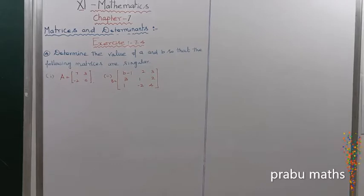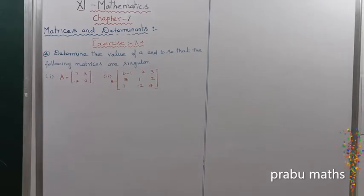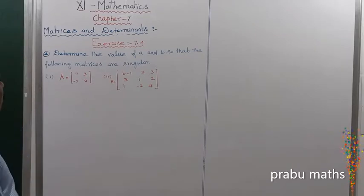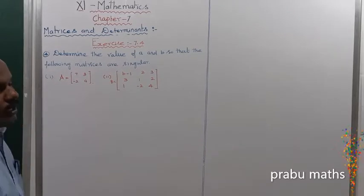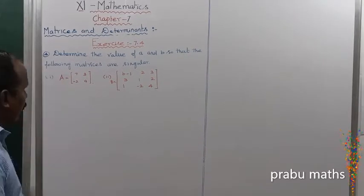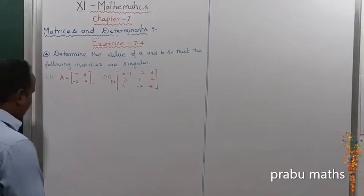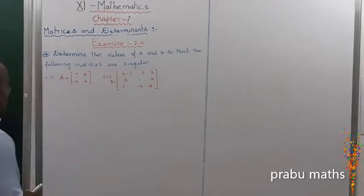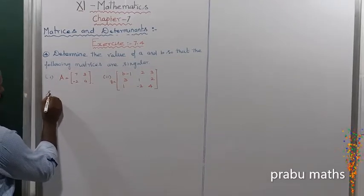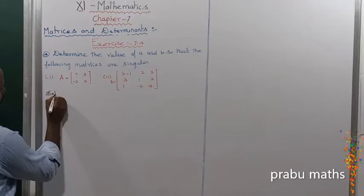Exercise 7.4, fourth sum: determine the value of A and B. Show that the following matrices are singular. Singular means the determinant value is equal to 0. Solution: